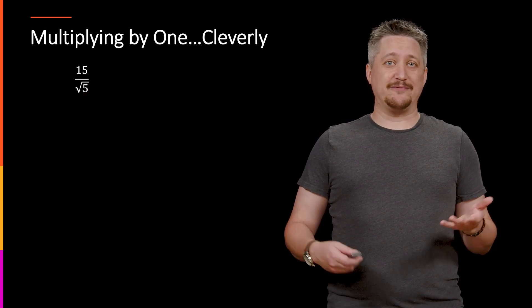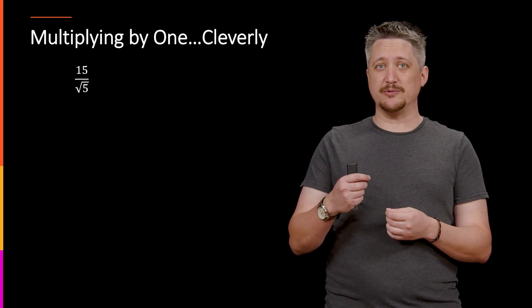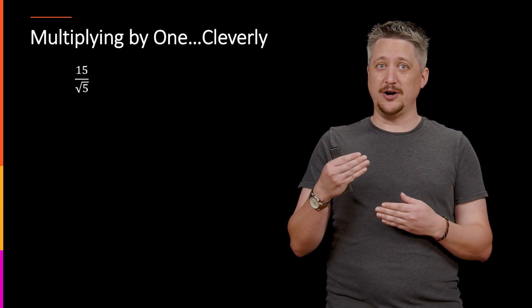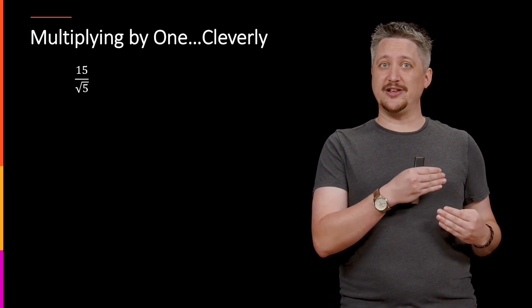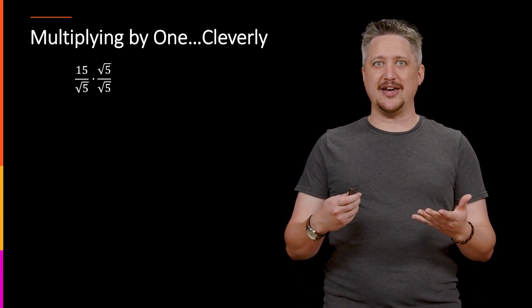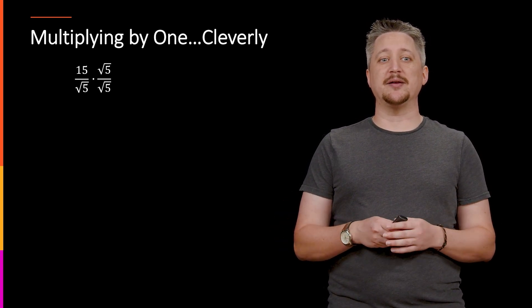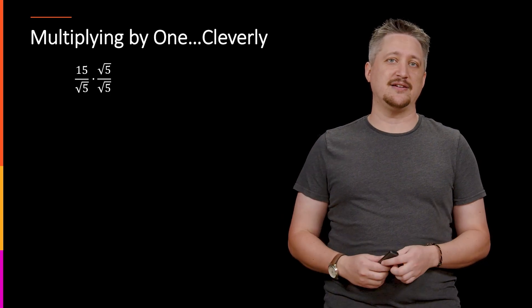But we can't just do that for free. So instead, we multiply by the square root of 5 over the square root of 5 because something over itself is 1. Multiplying by 1 doesn't change anything, so we haven't changed anything. So that's the clever step: how do I get rid of that square root in the bottom? I do it by multiplying by that thing over itself.